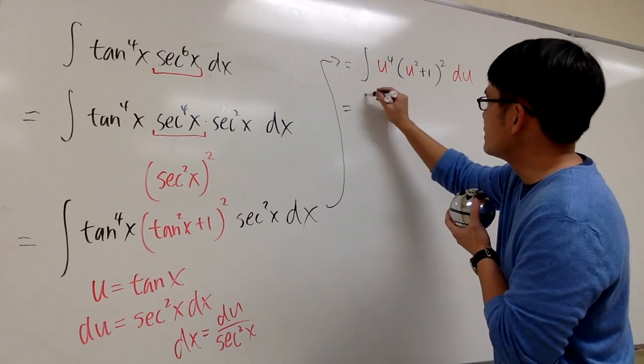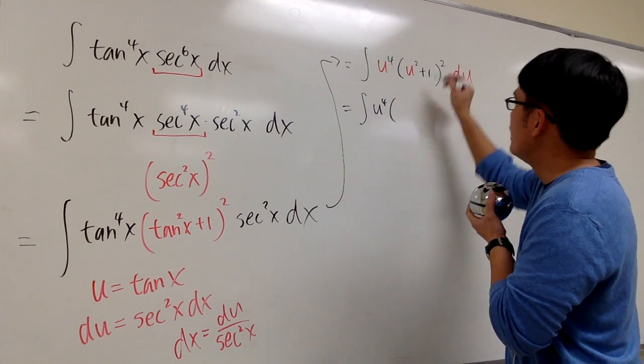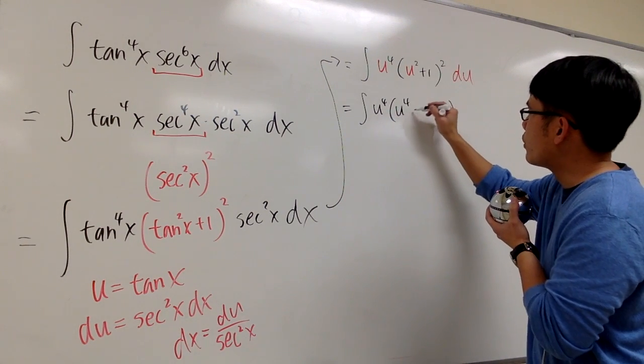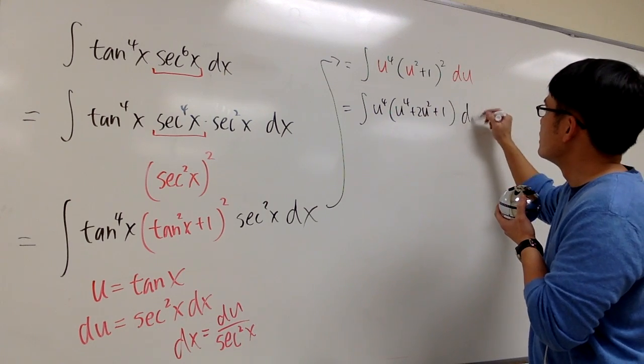So the way to do this is, of course, we have to do algebra now. This is u to the fourth power, and I have to multiply this out. But if you multiply this out, you get u to the fourth power, plus 2u squared, plus 1 du.